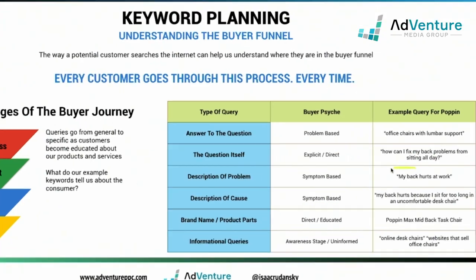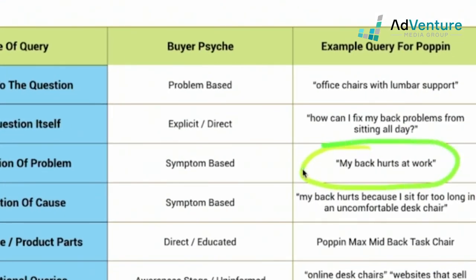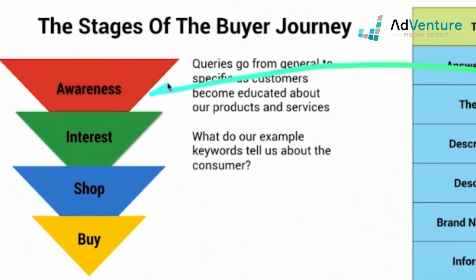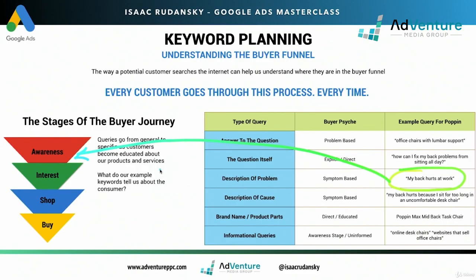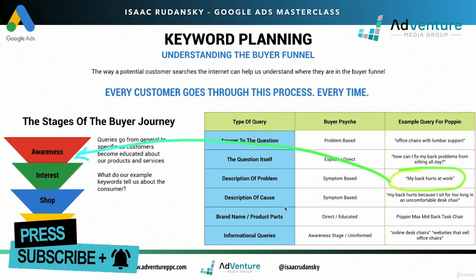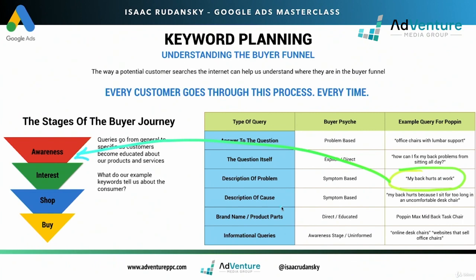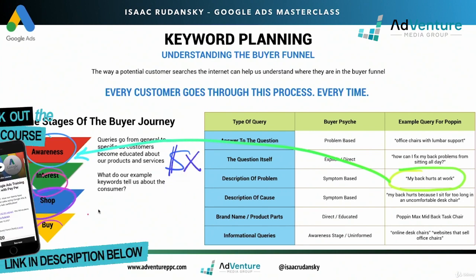Say somebody searches for 'my back hurts at work.' This is something I would say is in that awareness phase — very, very generic. We don't know if that person is looking to buy a chair, a better mattress, or go to a doctor. We don't even know if that person is looking for a solution or willing to pay for one. Maybe they're looking for a blog post or a free YouTube video. It's so general. At best, it fits into the awareness stage of the funnel. We want to be very conservative. If we have a limited budget, we don't want to bid on it at all — we really want to focus on shop and interest keywords.